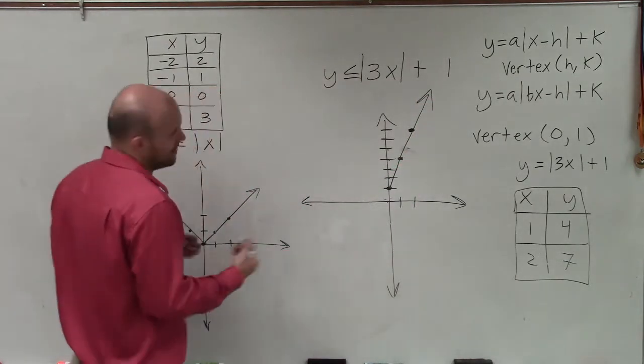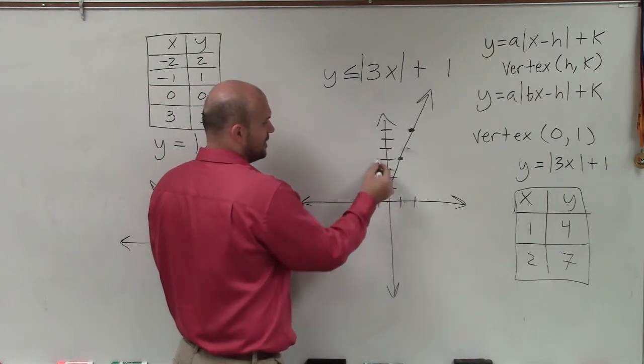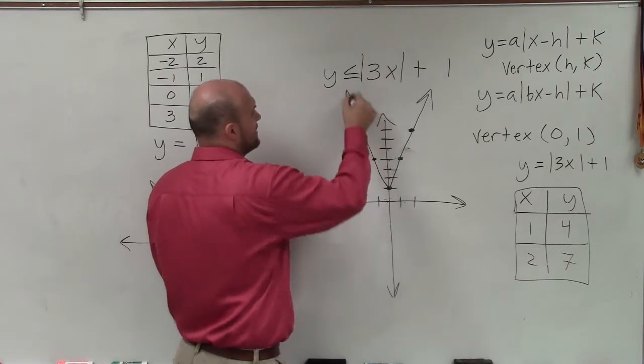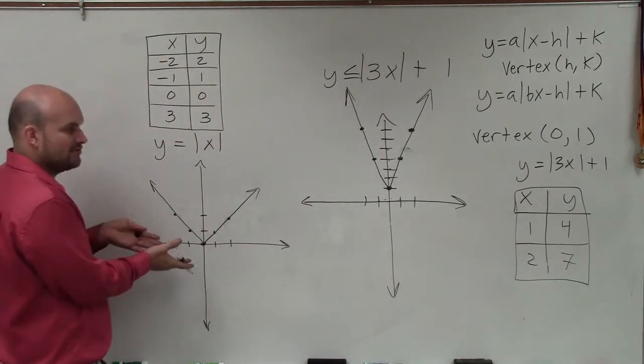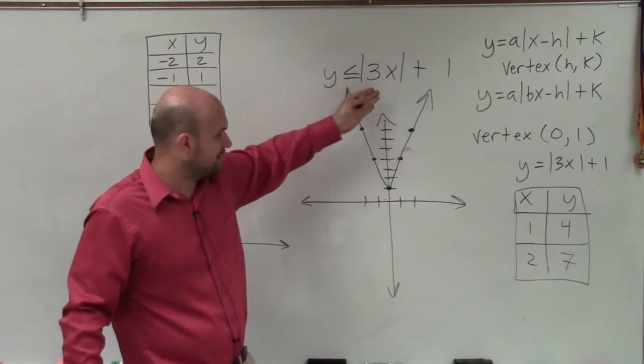So you can see how, let's reflect them over. So instead of going over 1, up 4, let's go to the left 1, up 4. And to the left 2, up 7. And so you can see how this one is horizontally compressed compared to our parent function. And that is going to be coming from our b, our 3x. And that's why that looks that way.